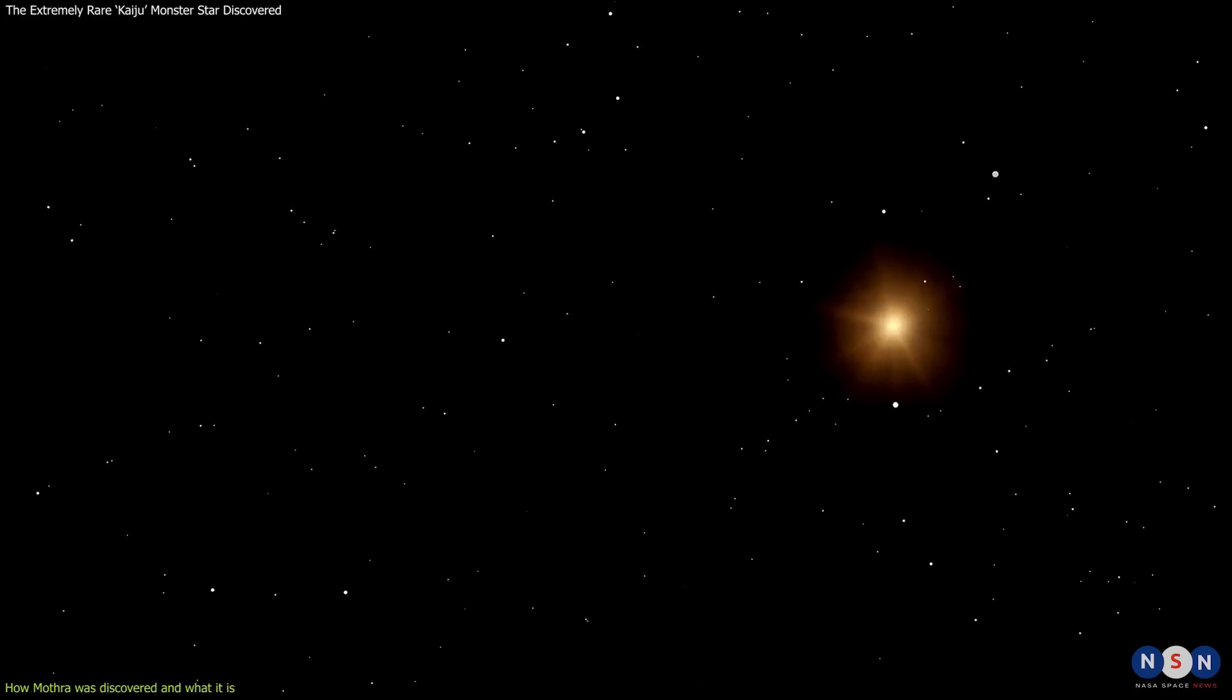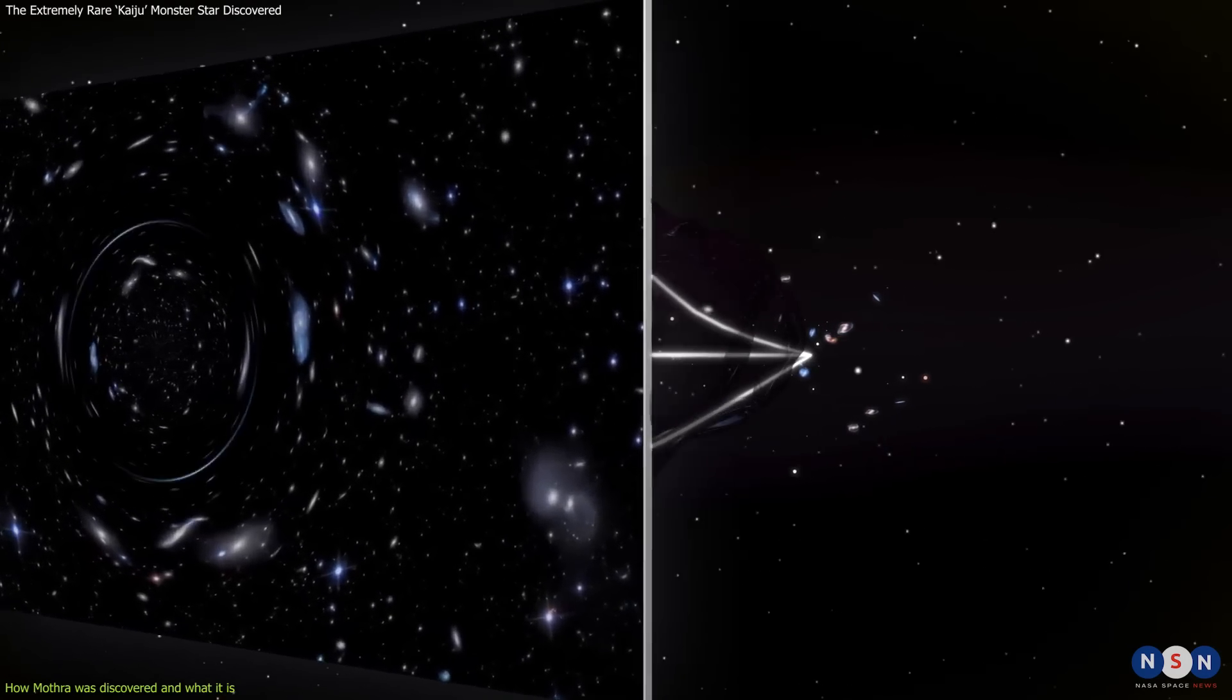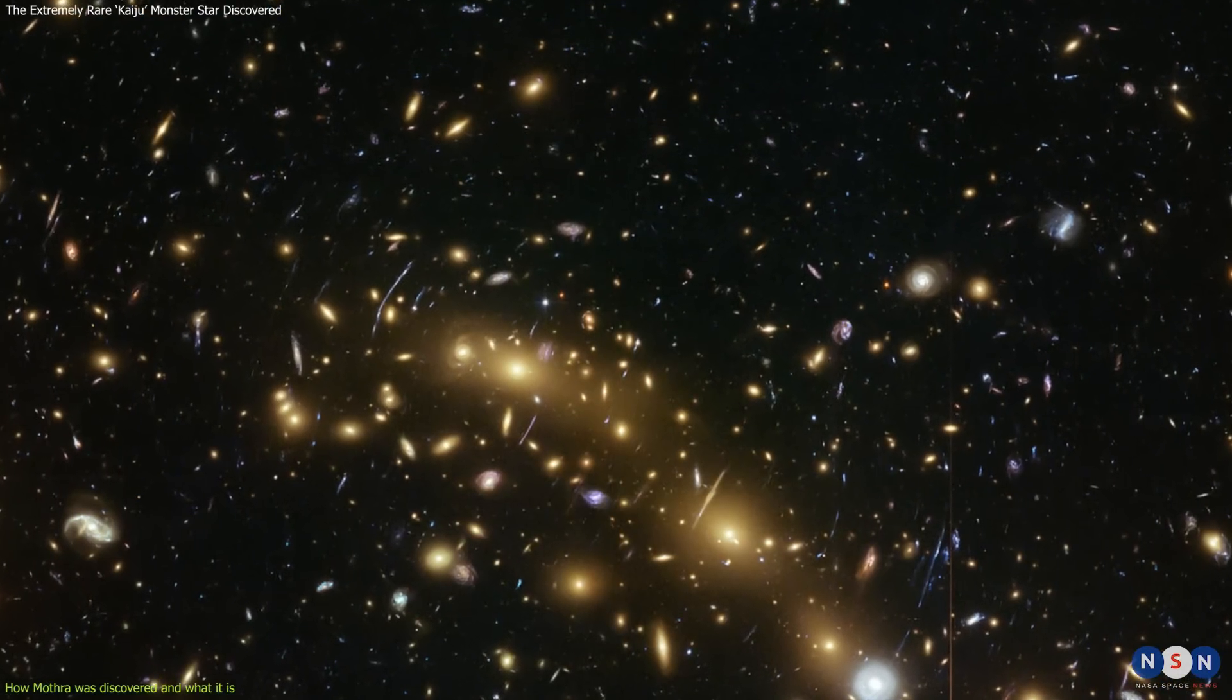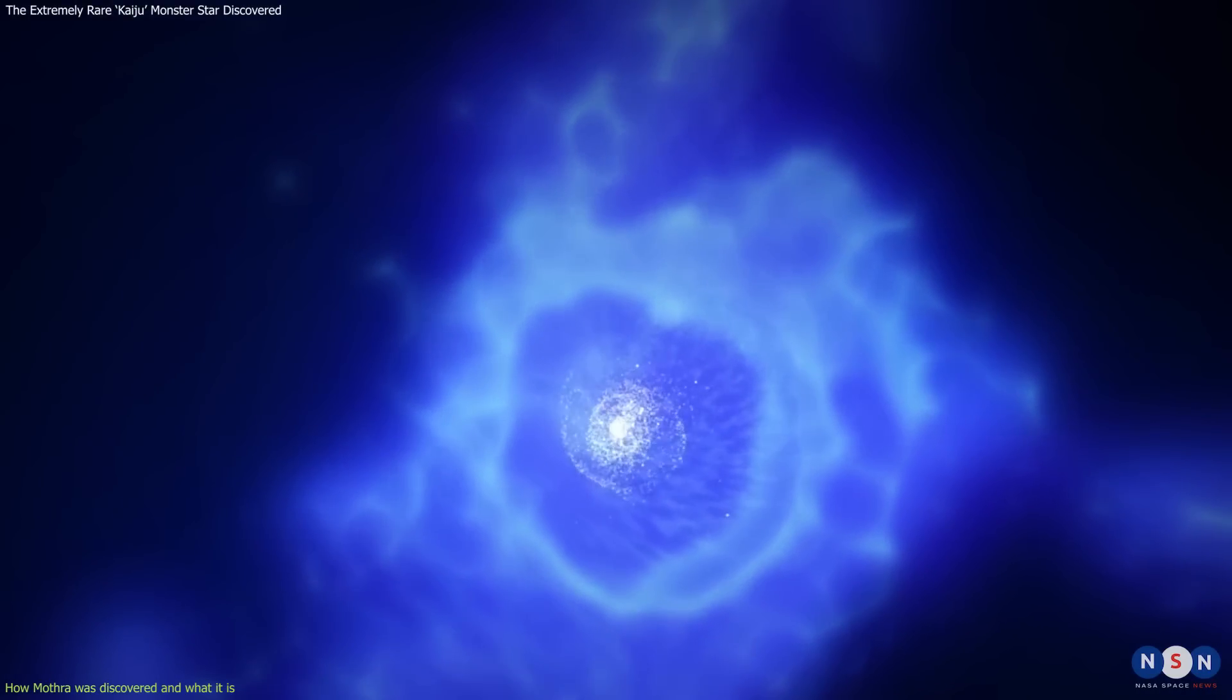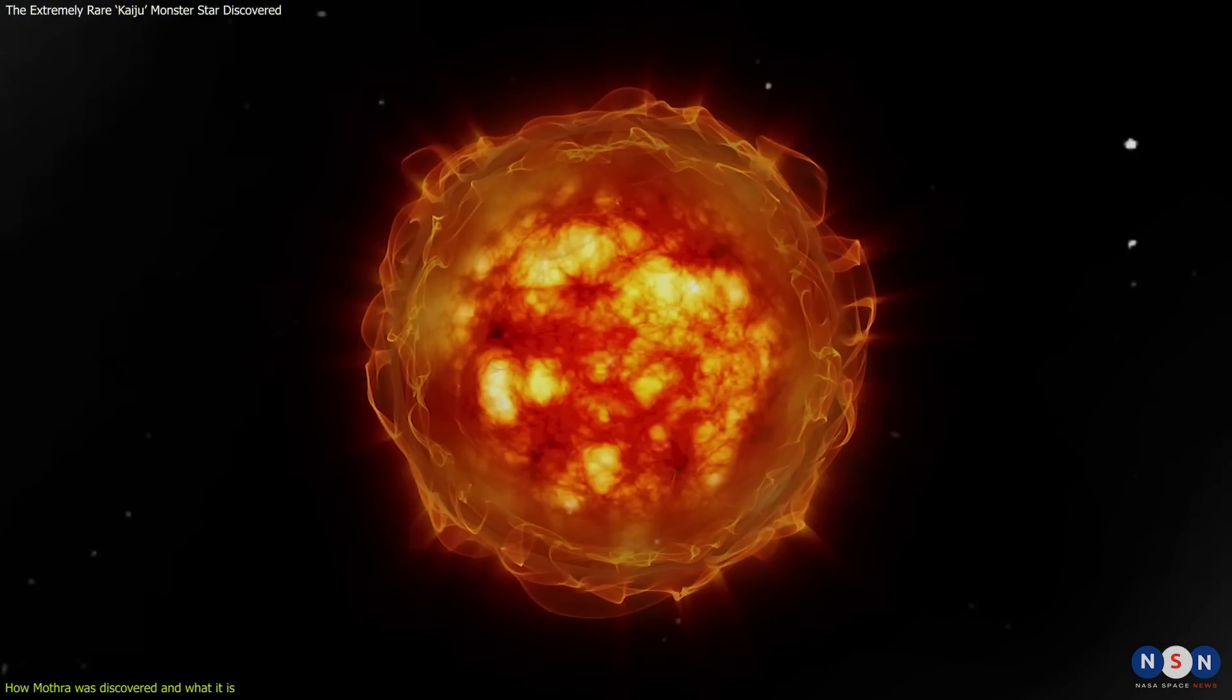This star is so unusual that astronomers think it could be pointing to something else in the sky: a clump of dark matter. Dark matter could be enhancing the gravitational lensing effect of the galaxy cluster, making it appear brighter and larger than it really is.